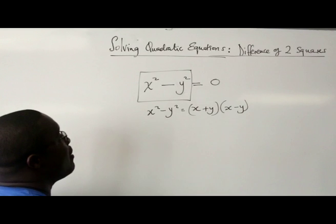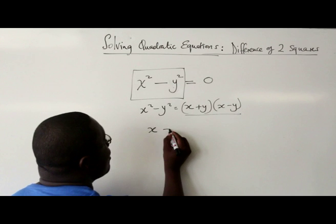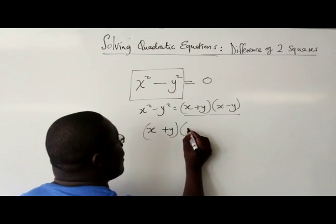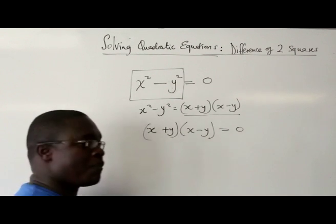So what you have to do now is substitute that with this right hand side. So (x + y)(x - y) = 0.